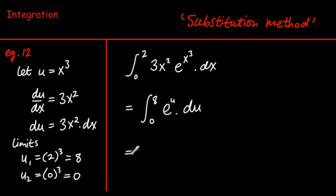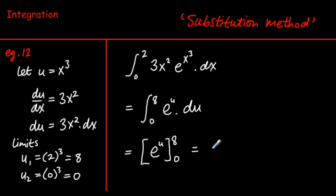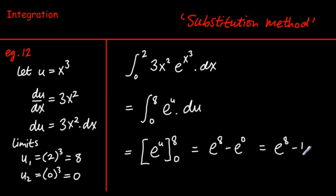Now it looks much more manageable. We integrate e^u, and the integral of e^u is just e^u, evaluated between the limits 8 and 0. Substituting in 8 gives e^8, and subtracting the value at 0 gives e^8 minus e^0. Anything to the power of 0 is 1, so the answer is e^8 minus 1.